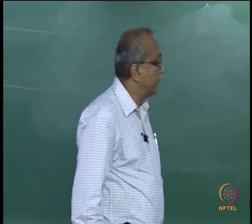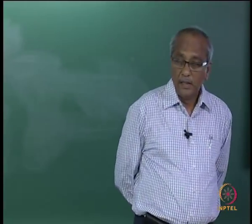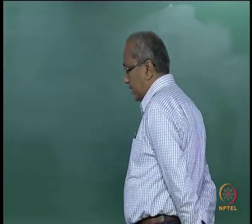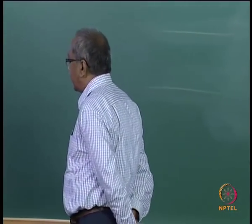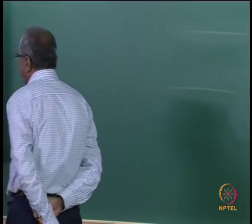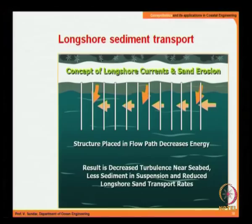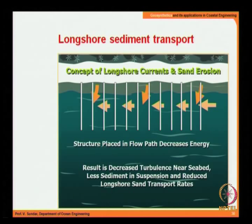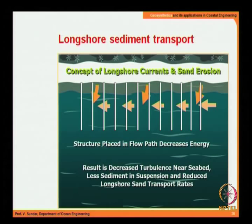Application of geotubes: as we have seen in the basic course on long-shore sediment transport and long-shore currents, a structure placed in the flow path decreases the energy, resulting in decreased turbulence near the sea bed, less sediment in suspension, and reduced long-shore sand transport. Due to these features you can have groins placed at intervals — a number of groins projecting into the ocean is referred to as a groin field.